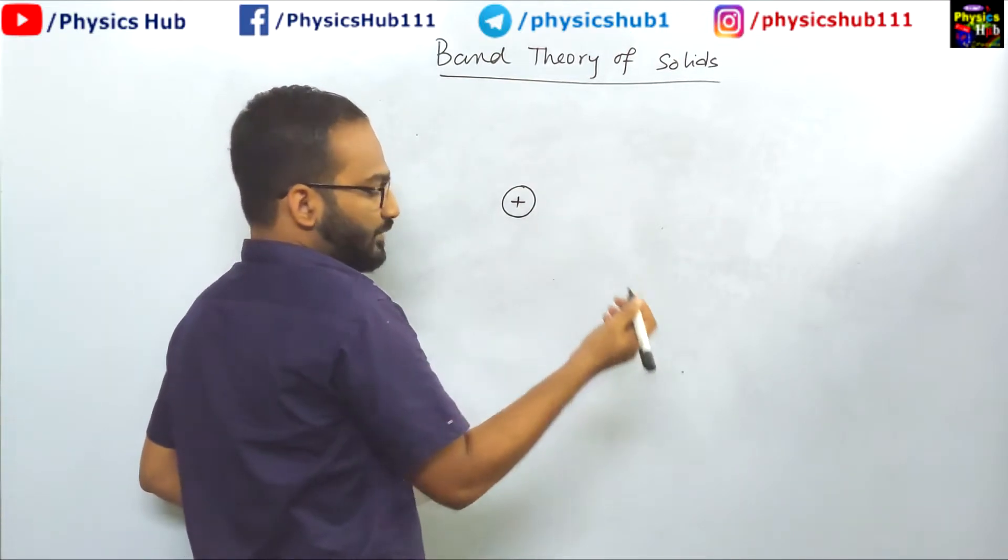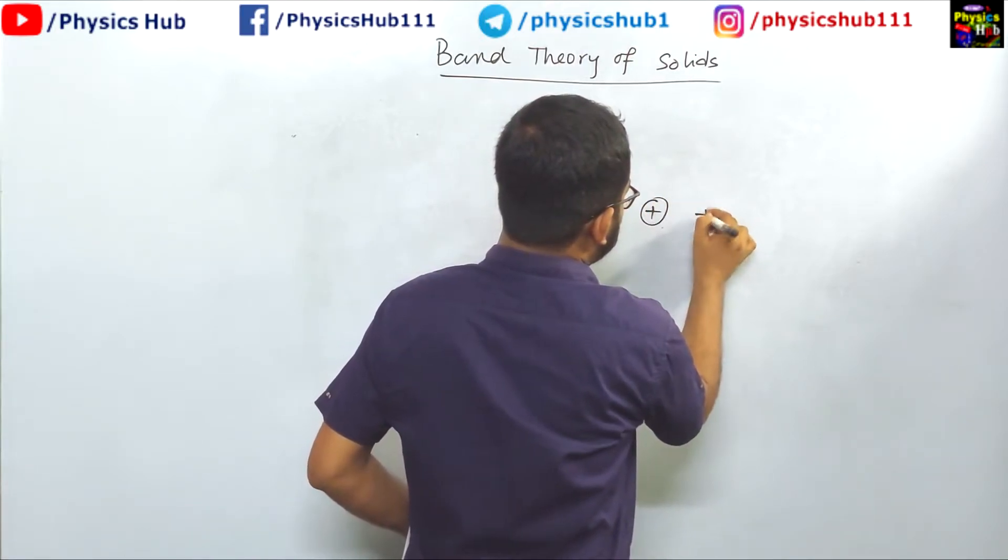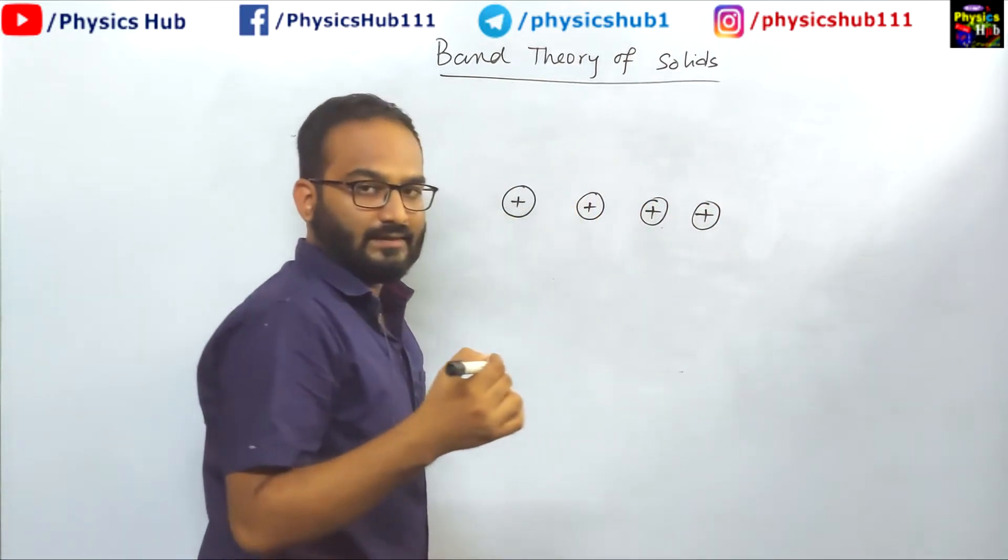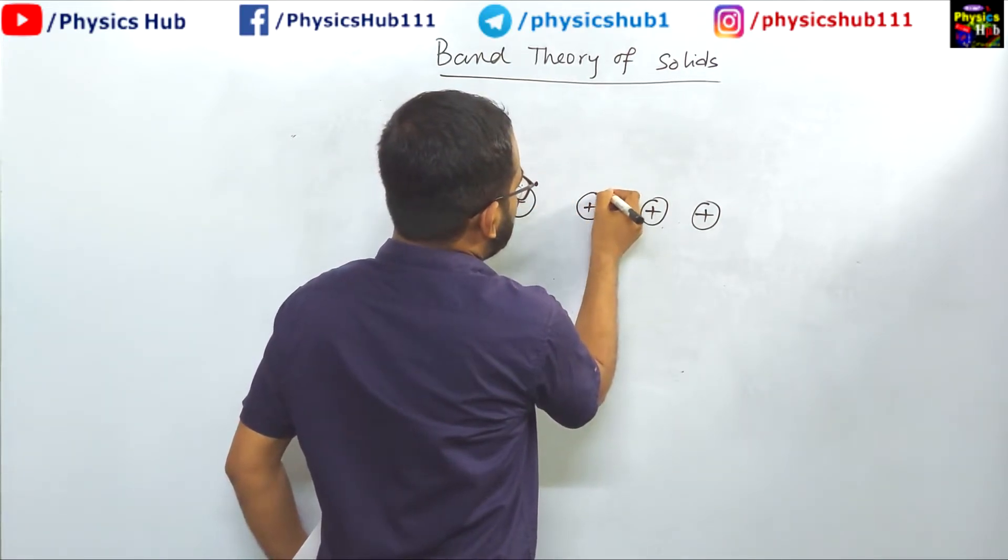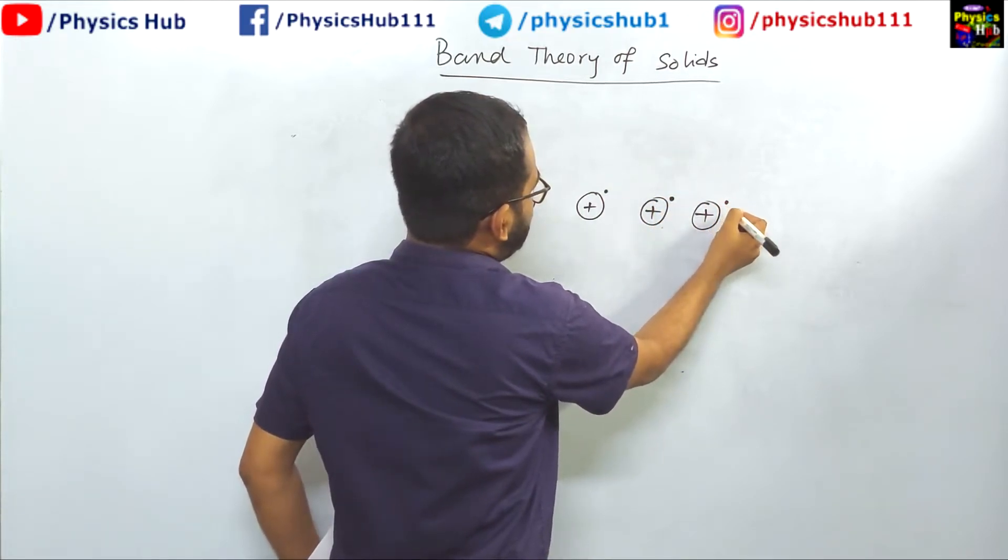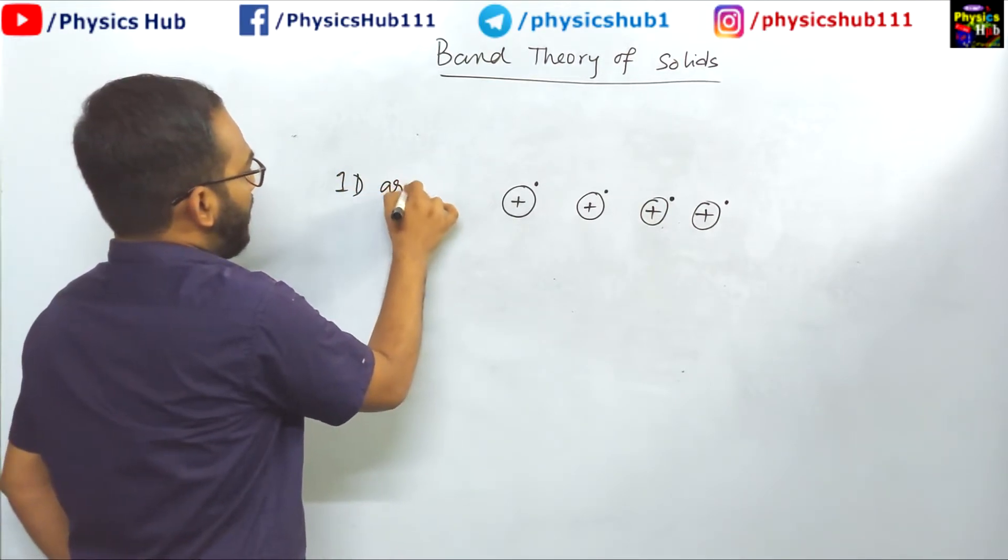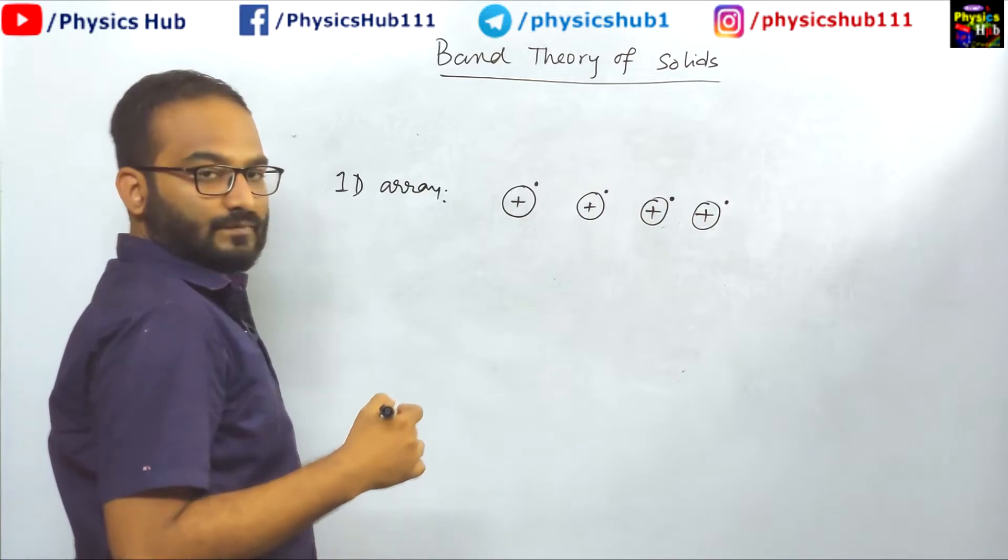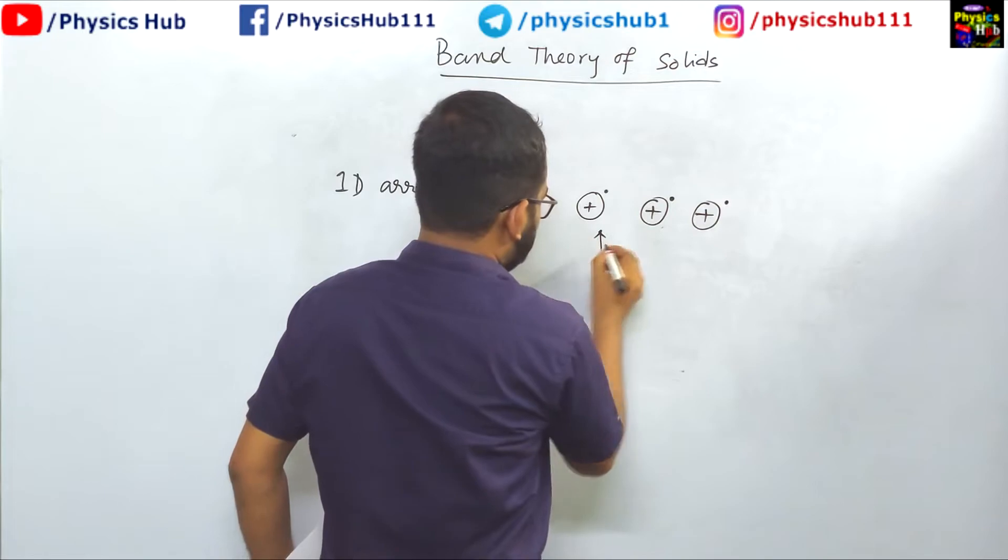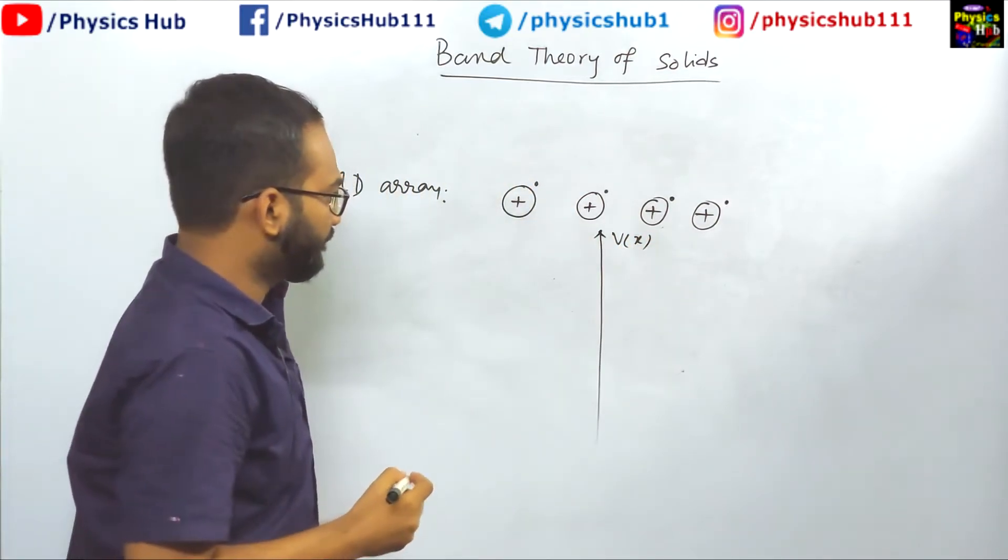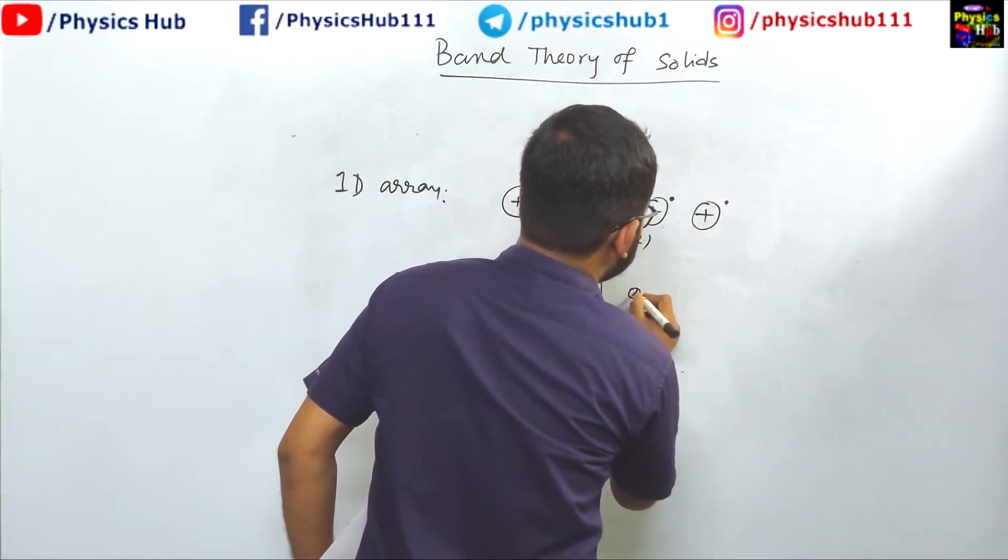For simplification purposes, we consider an array of atoms, and each electron is associated with these ion cores. Because of this one-dimensional array of atoms, the potential took a specific form. Consider this as V(x). These are the atom positions.